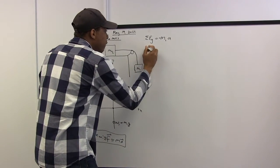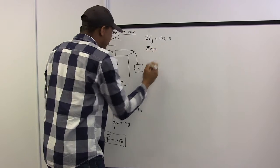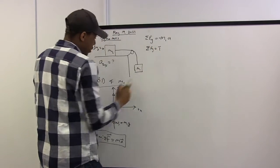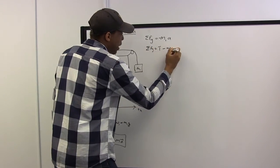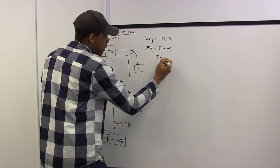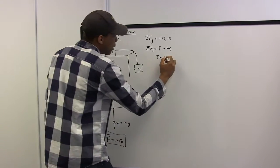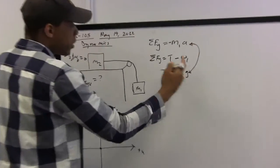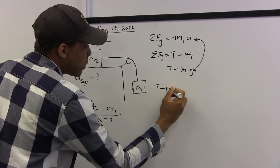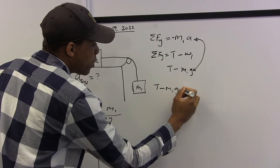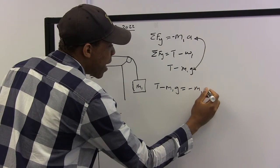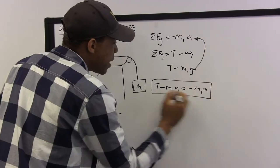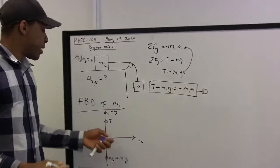So the sum of forces acting on m1 in the y direction is the tension minus the weight, and this is just the tension minus m1g. We equate these two expressions and we'll have the tension minus mass 1 times acceleration due to gravity equals negative mass 1 times acceleration. This is the equation of motion for mass m1.